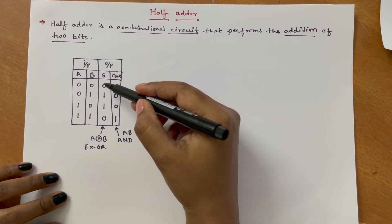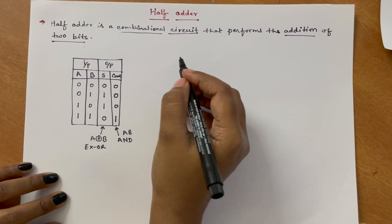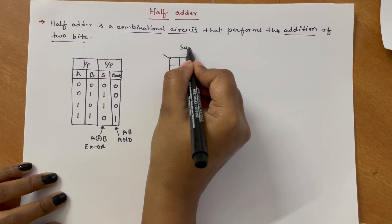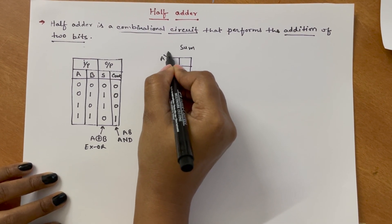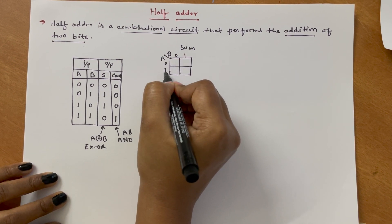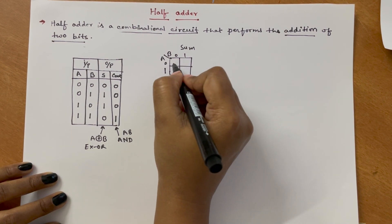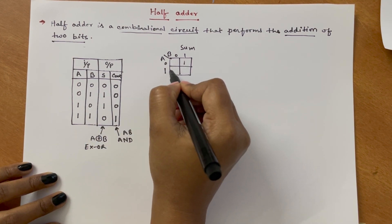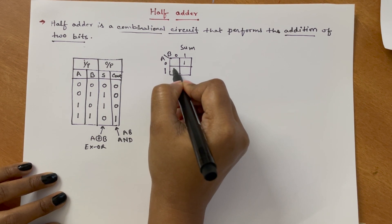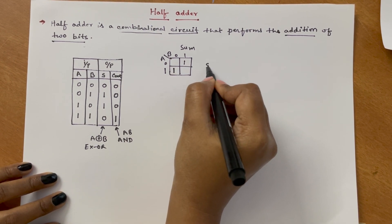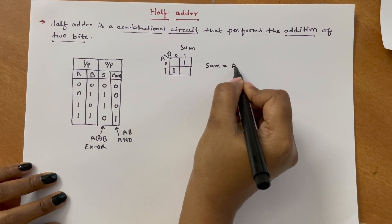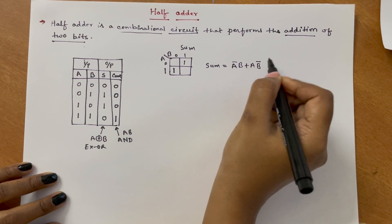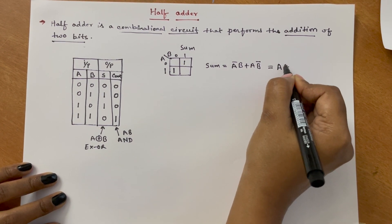We can derive this expression using a KMAP as well — that will be very easy. For sum, writing the KMAP for AB: the values are 0, 1, 0, 1. Writing 1 where the output is 1 — for 0,1 it is 1 and for 1,0 it is 1. So sum will be A'B + AB', which is A XOR B.